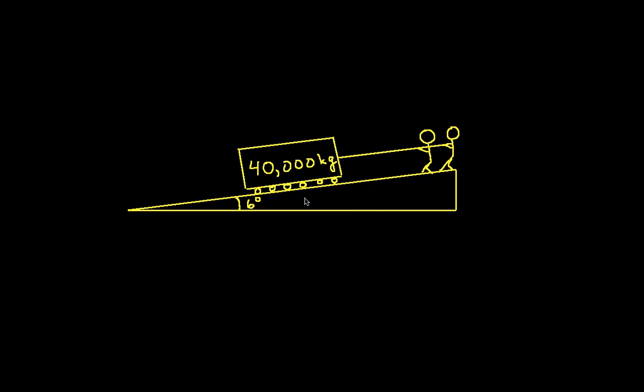So, the first thing that we want to do then is create a free body diagram. And to do this, we will cut the block free from its environment. So we'll cut it here at the rope, we'll cut it off the rollers, and that will leave us then with just the block. So we're doing a free body diagram of the block. So let's draw the block. Here's our block.